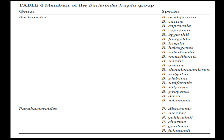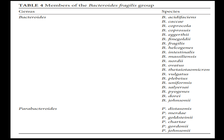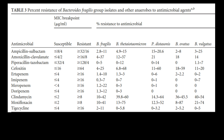The B. fragilis group is composed of more than 20 Bacteroides species. Among the B. fragilis group, B. fragilis accounts for 40% to 54% of the Bacteroides isolates recovered from intra-abdominal and other infections. B. thetaiotaomicron accounts for 13% to 23% of the isolates, while other members account for 33% to 39%. Antimicrobial susceptibilities vary — especially to second and third generation cephalosporins. B. fragilis is generally the most susceptible, while B. thetaiotaomicron and Parabacteroides distasonis are generally more resistant.